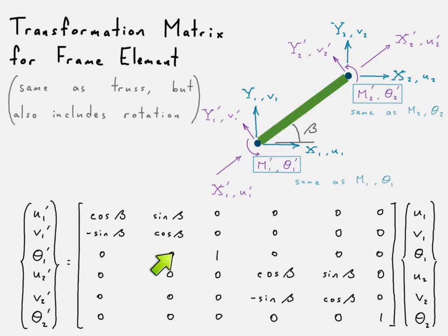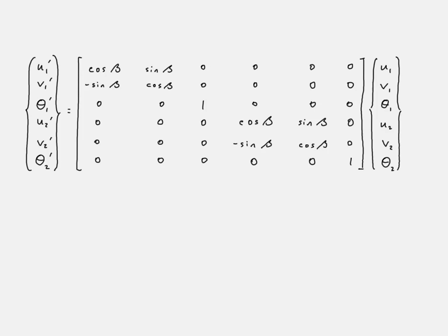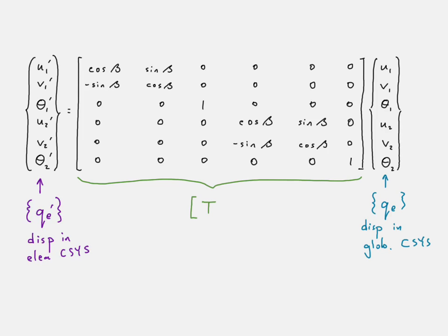Note how it's almost exactly the same. The only difference is that we also included terms corresponding to the fact that our rotation in the elemental coordinate system rotates about the exact same axis as our rotation in the global coordinate system. So there is no transformation that really needs to take place — it's exactly the same. That's true for the first node as it is for the second node, which is why we have that one down there. So that's our transformation matrix. We'll write it out in terms of notation: the displacement in the elemental coordinate system, the displacement in the global coordinate system, and the elemental transformation matrix.